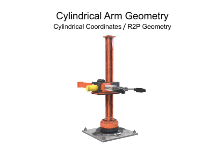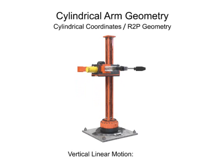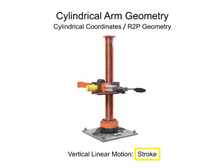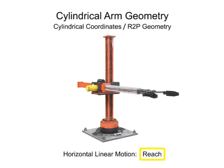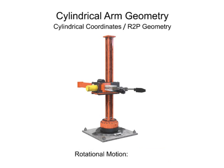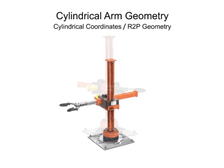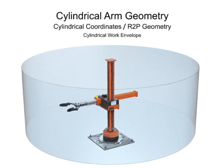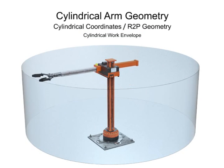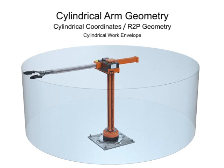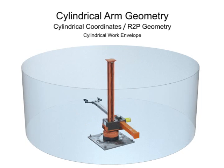Robotic arms with cylindrical geometry move linearly in two directions. Vertical linear motion is called stroke, horizontal linear motion is called reach, and rotational motion is called swing. Cylindrical geometry robots have a cylindrical work envelope, with the advantage of a robotic arm reach that is deep at both the top and bottom of the stroke.